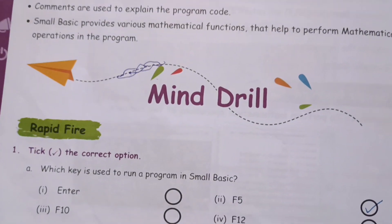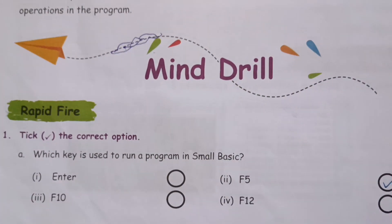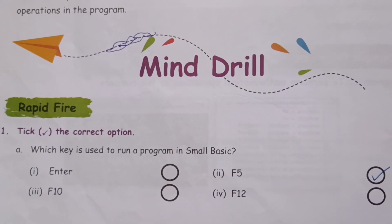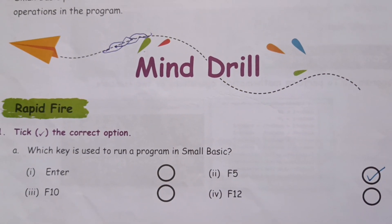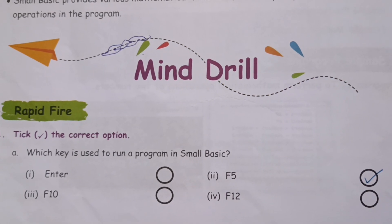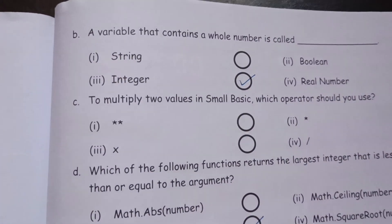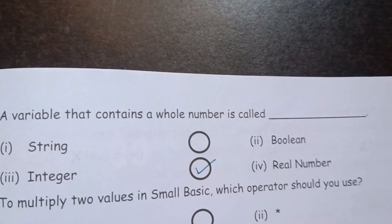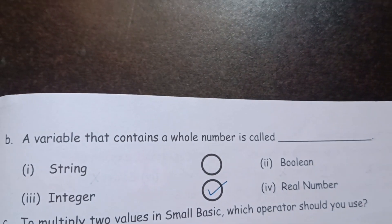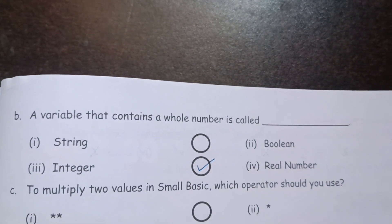The first question is: Tick the correct option. Which key is used to run a program in Small Basic? The answer is F5. A variable that contains a whole number is called an integer.